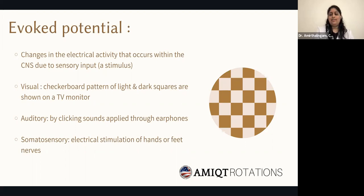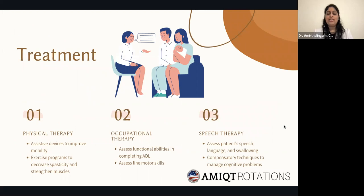For treatment of multiple sclerosis, there is both medical and non-medical treatment. Non-medical treatment — such as physical therapy, occupational therapy, and speech therapy — is very important to recommend, as it helps patients with activities of daily living, supports muscle and motor function, and helps build an effective support system.